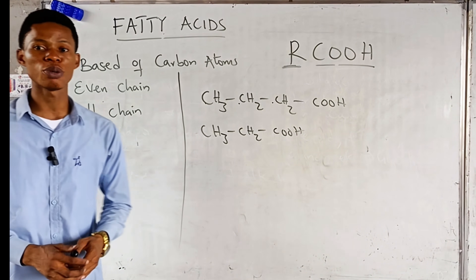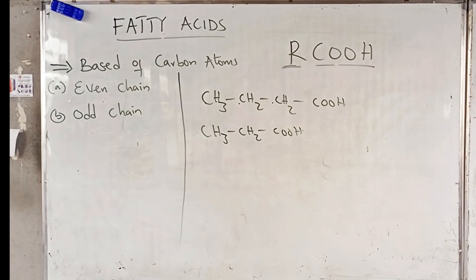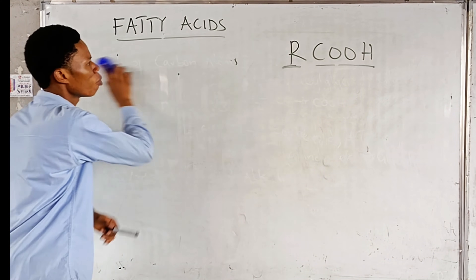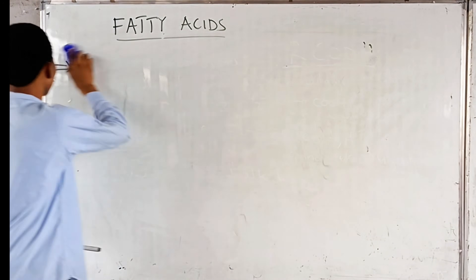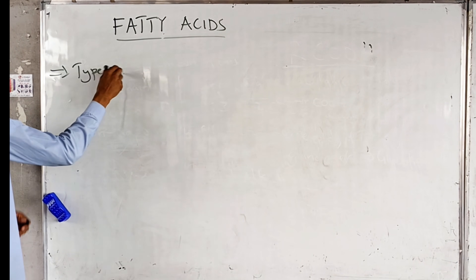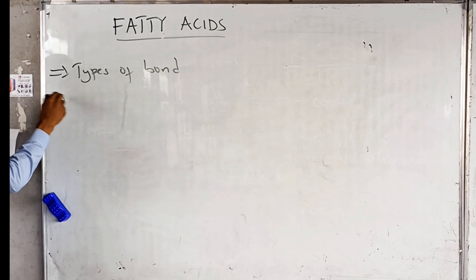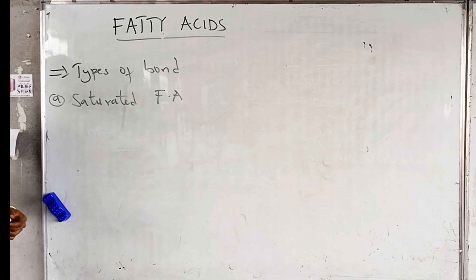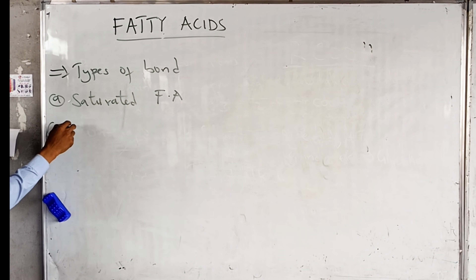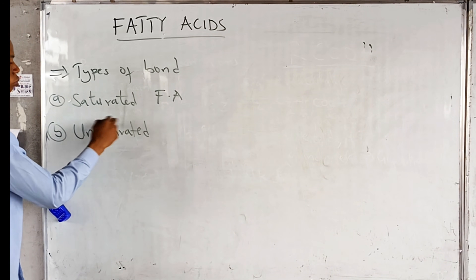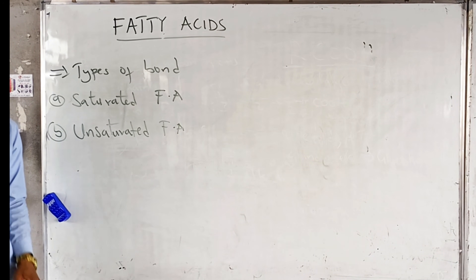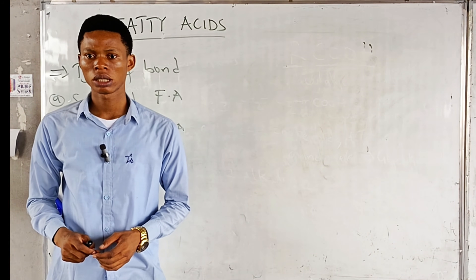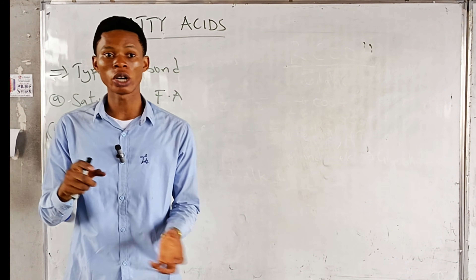Next, let's look at classification of fatty acids based on the type of bonds present. Based on the type of bonds present in fatty acids, we can have saturated fatty acids and unsaturated fatty acids. Recall from chemistry: when a compound is unsaturated, it means there is the presence of either a double bond or a triple bond; when a compound is saturated, it means single bonds throughout.